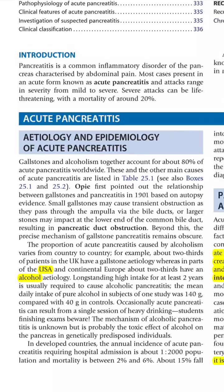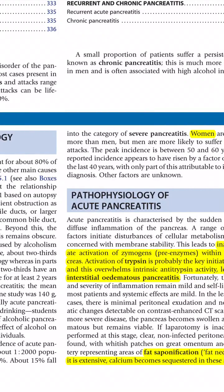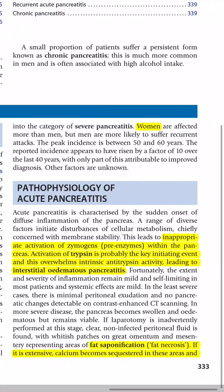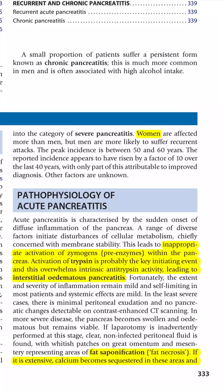Acute pancreatitis etiology: the most common cause in the USA is alcohol, and the most common cause globally is gallstone. A memory aid: A for alcohol in America, G for gallstone globally. Women are affected more than men, likely because gallstones are more common in females, and gallstone is the most common cause globally.